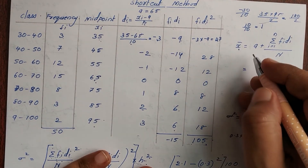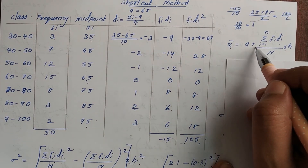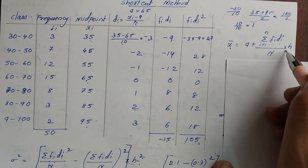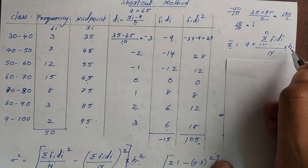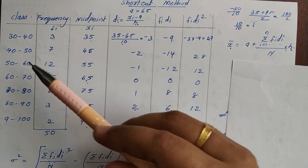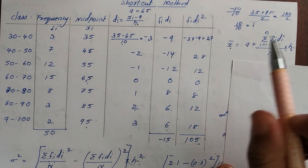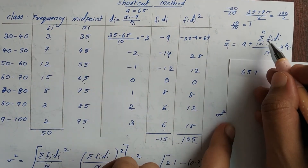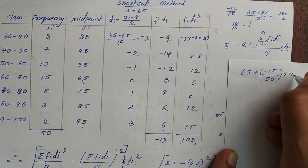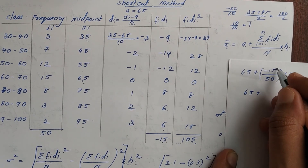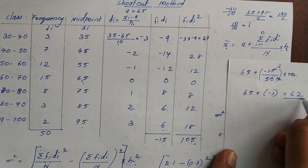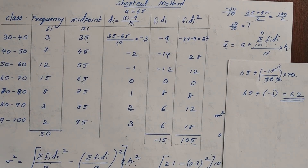Now for the mean using the step deviation method: x-bar equals A plus (summation fi·di / n) × h. That is 65 plus (−15 / 50) × 10. The 10s cancel, giving 65 minus 3, which equals 62. So the mean is 62.